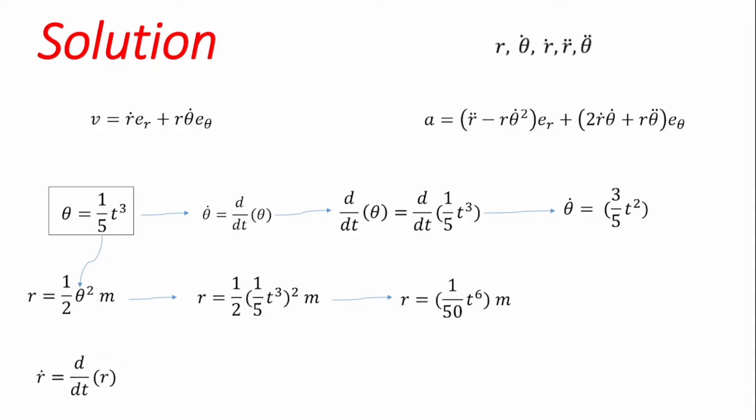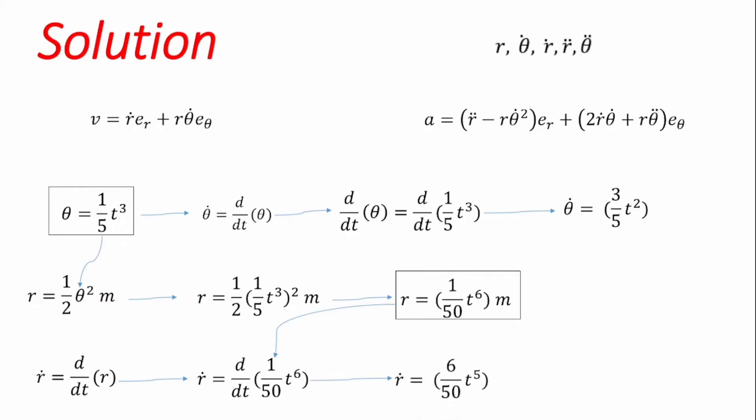Next we want to find ṙ, the time derivative of r. Starting with r = (1/50)t⁶ and differentiating with respect to time, we get ṙ = (6/50)t⁵.